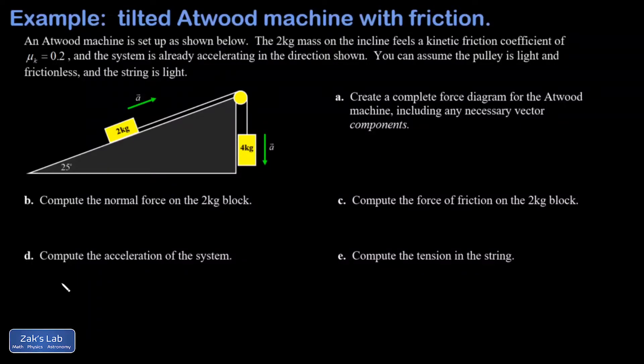In this problem we have a tilted Atwood machine that includes friction at the surface the two kilogram block is sliding along. The coefficient of kinetic friction is mu_k = 0.2. We're asked for everything: complete force diagrams for each moving piece, the normal force on the two kilogram block, the force of friction, the acceleration of the system, and the tension in the string.